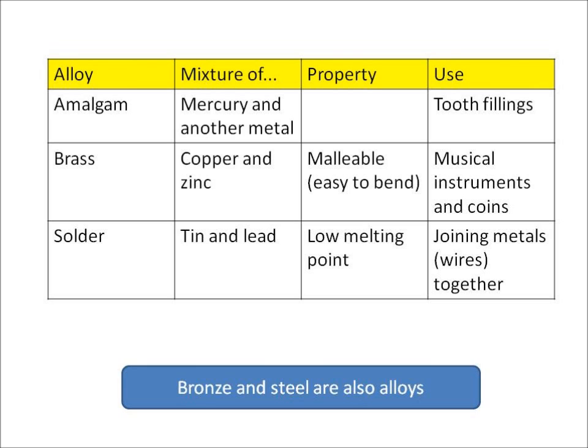Amalgam is an alloy which is made of mercury mixed with another metal, and that's used for tooth fillings. Brass is an alloy and that's a mixture of copper and zinc metals.